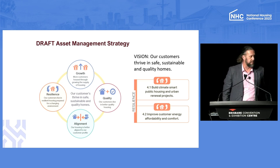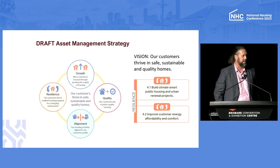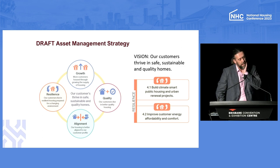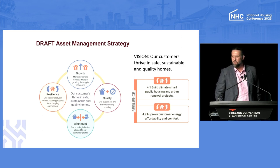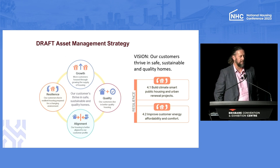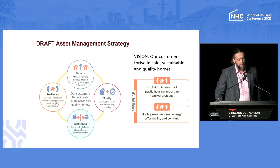I wanted to come at a place that is linked to strategy and policy, because that's where my background is from. This is the elements of our draft asset management strategy, soon to be approved by the board. It focuses on four key pillars around growth, quality and alignment, but the one on the left-hand side is the one that links us to what we do today — and that's about resilience. That's about building homes that can sustain themselves in a changing environment.